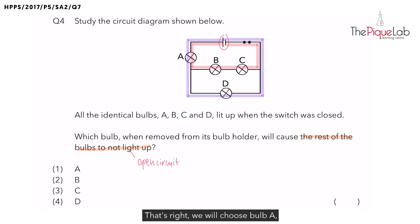That's right. We will choose bulb A as both electrical pathways pass through bulb A. So if we were to remove bulb A like this, is there an open or closed circuit with the other bulbs? Open circuit.